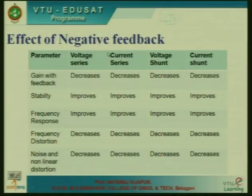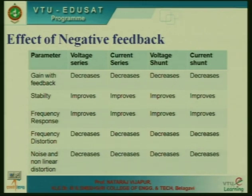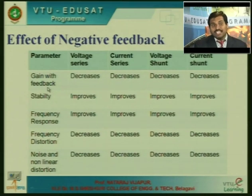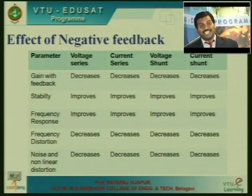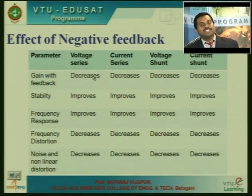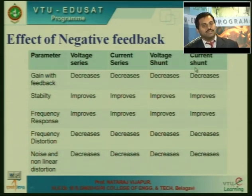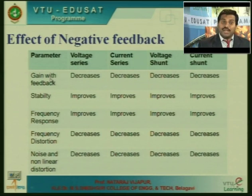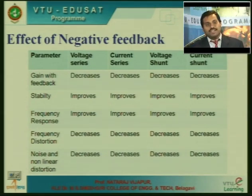All four configurations — voltage series, current series, voltage shunt, and current shunt — oppose the input signal, which is negative feedback. Gain with feedback is always reduced at the cost of stability. The expression for gain with feedback is Af equals A divided by (1 plus A times beta). So gain always reduces.